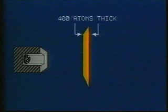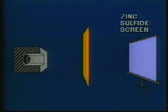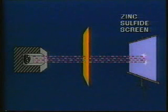Rutherford's probe consisted of a point source of alpha particles, a sheet of gold foil, and a zinc sulfide detection screen. Rutherford found that most of the alpha particles passed through the gold foil with little or no detectable change of direction.